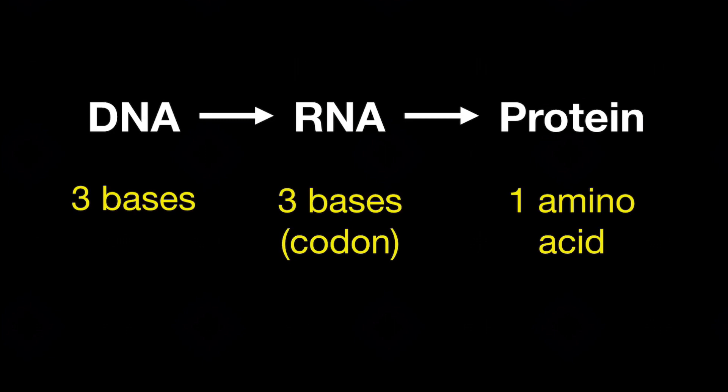Now of course a piece of DNA is many many more bases long than just three bases, so ultimately you can code for a chain of amino acids, and this produces a protein.